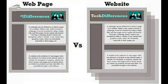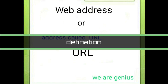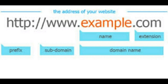Ab baat karte hain: what is a web address? Isse URL kehte hain — URL matlab Uniform Resource Locator. Each website has a unique address called URL. Matlab har website ke paas apna khud ka ek unique address hota hai, usi ko hum web address, URL kehte hain. URL kuch aise dikhta hai jaise aap screen pe dekh rahe hain.